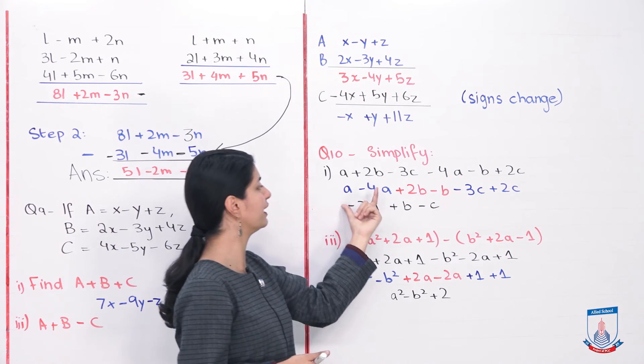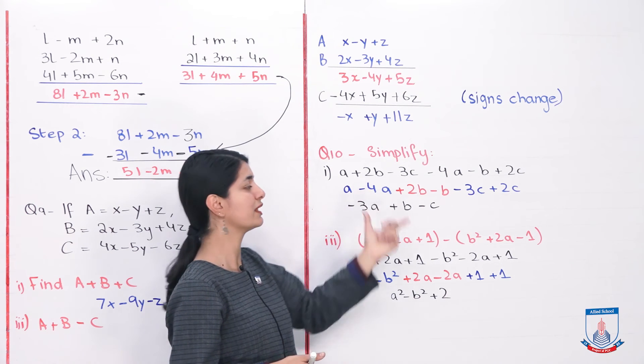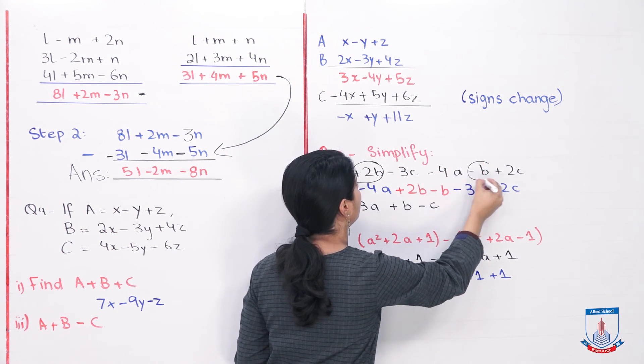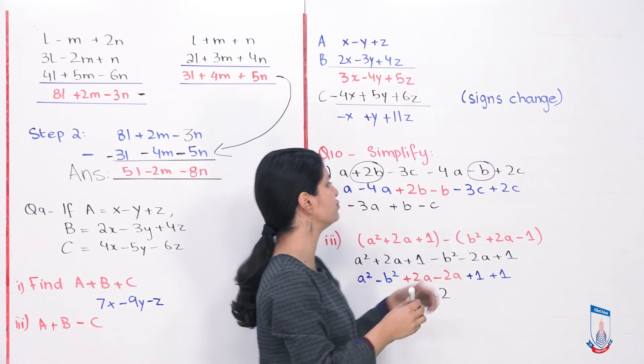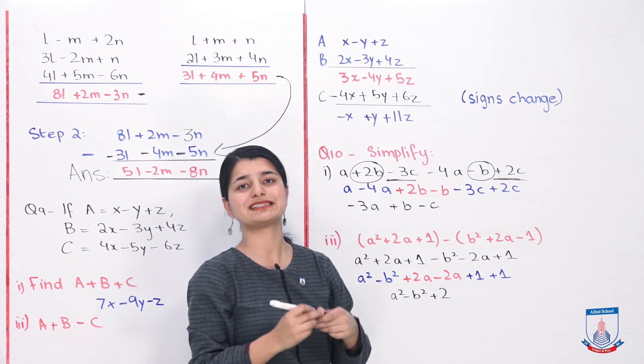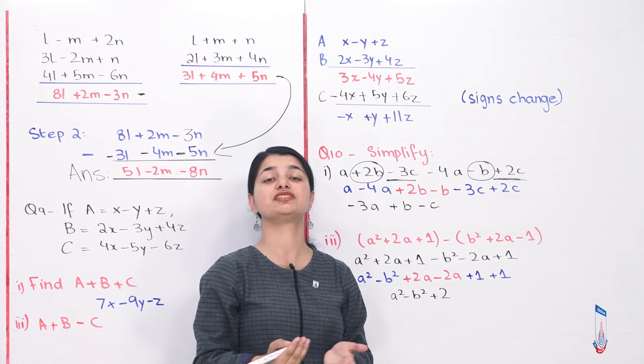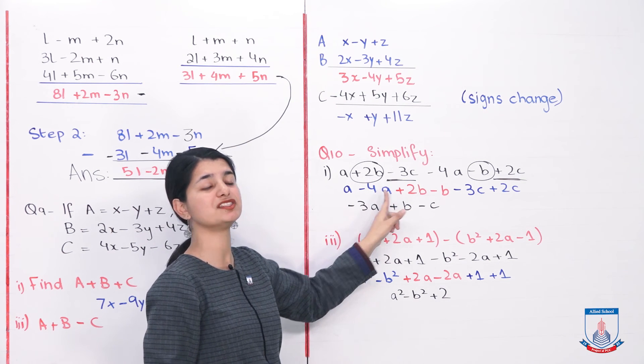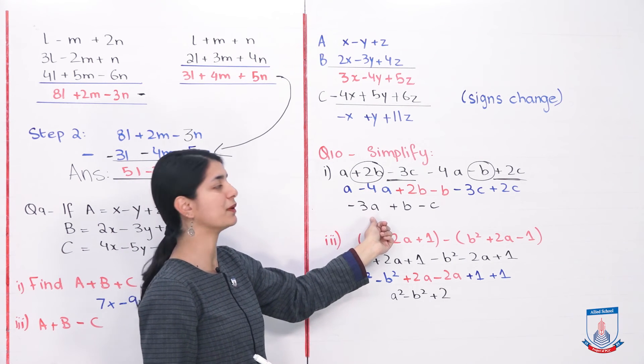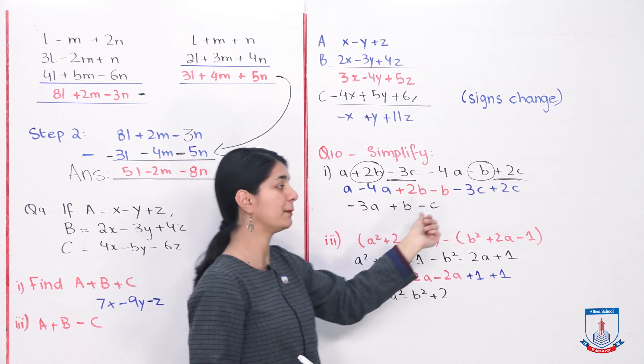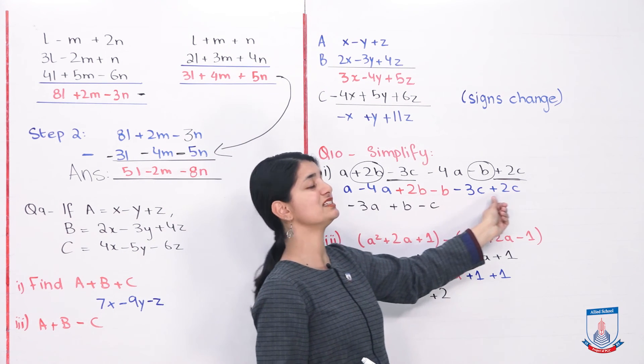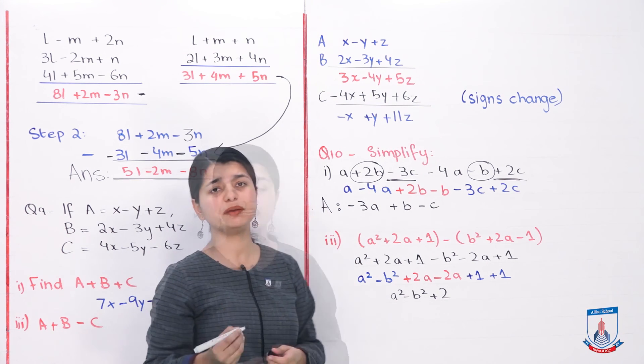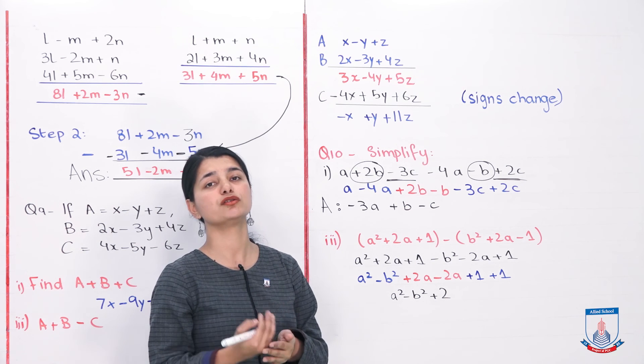Like A and 4A we will write together, because both have the same variable, both are like terms. Similarly 2B and minus B we have gathered together. This plus 2B and this minus B would come together. And similarly minus 3C plus 2C we have also gathered together. So like terms we have taken together, then we have solved them and our simplified answer we have got. As you can see here, A minus 4A, there is positive and negative sign in both, you subtracted. 3A. And because 4 is bigger, so negative 3A is your answer. Plus 2B minus B, if we solve this, your answer will be plus B. And minus 3C plus 2C, from this also answer will be minus C. So this is your answer, simplified form. There was nothing difficult in this, the reason being that you have only taken like terms together and solved them.